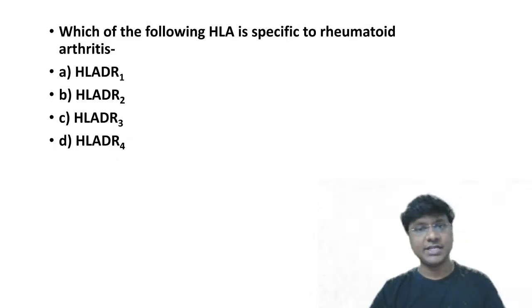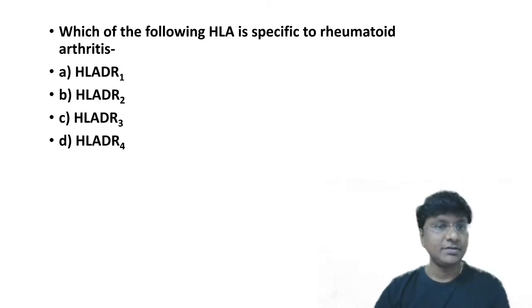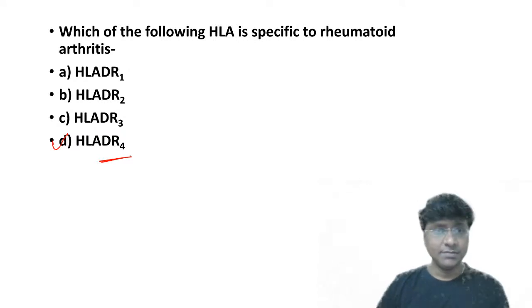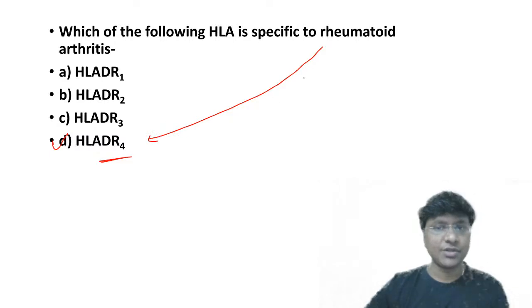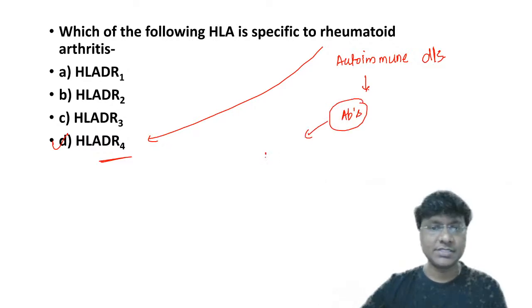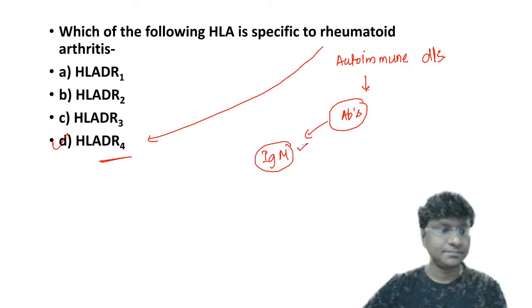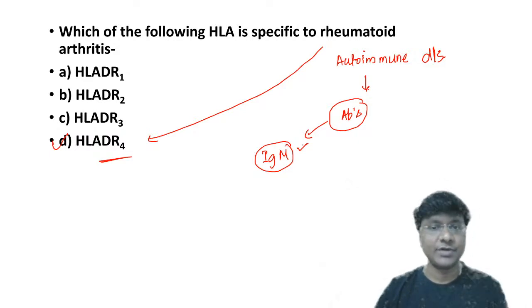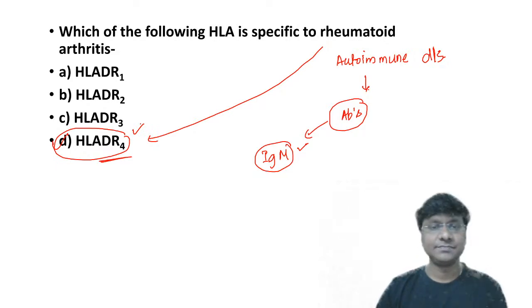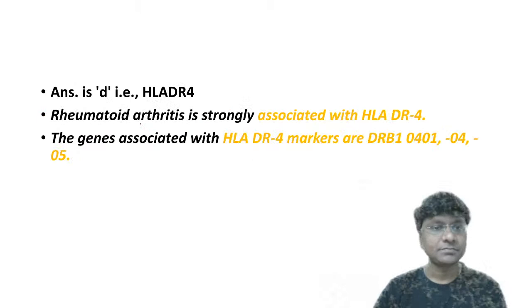Which of the following HLA is specific to rheumatoid arthritis? HLA-DR1, DR2, DR3, or DR4? The answer is HLA-DR4. Rheumatoid arthritis is an autoimmune disorder where antibodies of IgM type are formed. This autoimmunity is very common in individuals with HLA-DR4 association — that is a very important point related to rheumatoid arthritis. Note also that in Type 1 diabetes mellitus, it is HLA-DR3 as well as DR4, both.